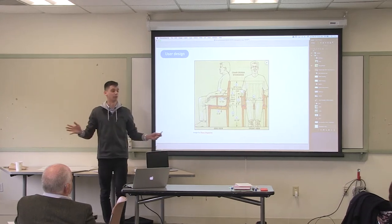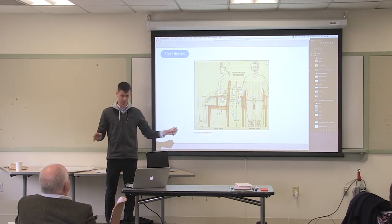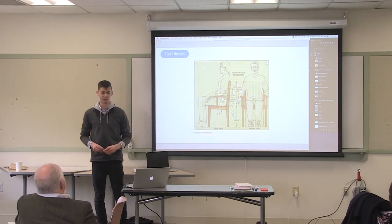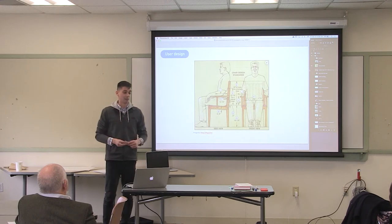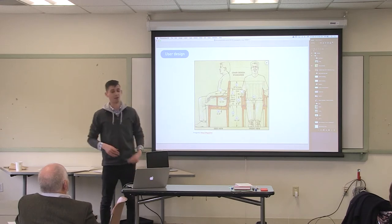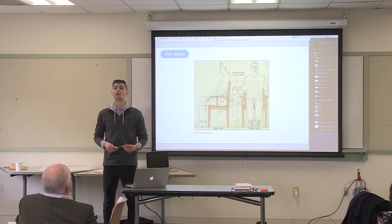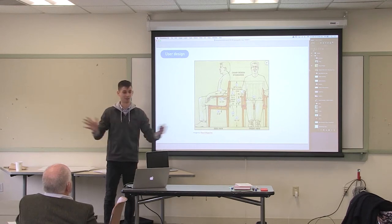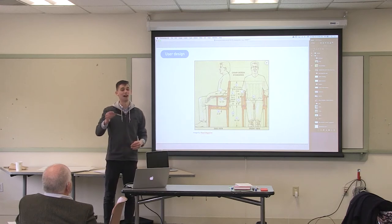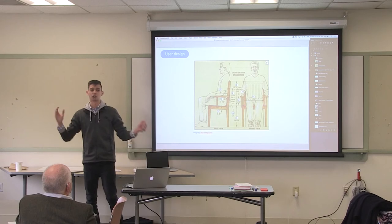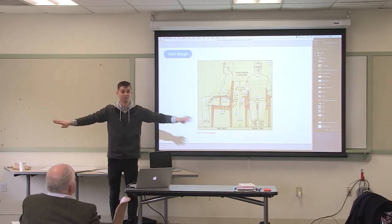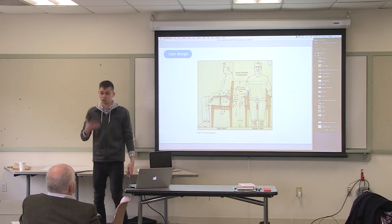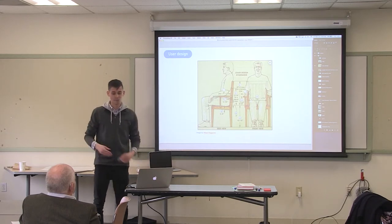So Quetelet added all 6,000 numbers up, divided by 6,000, and very proudly declared that the average chest circumference of a human man is 39 and three-quarters inches. He believed that humanity was striving towards this average, and that everyone outside of this average was aberrant. This was crazy thinking at the time, but it really caught on and he became a celebrity by 1850 and 1860.